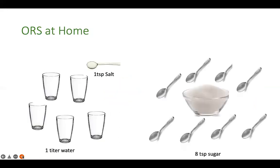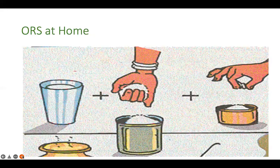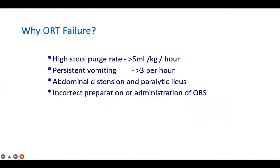If market-available ORS is not available, you can prepare it at home: take one liter of water, add one teaspoon of salt and eight teaspoons of sugar. Alternatively, take one glass of water with one pinch of salt and one handful of sugar. ORT can fail if the purge rate is very high, the child is vomiting more than three times per hour, there is abdominal distension or paralytic ileus, or the ORS is prepared incorrectly.